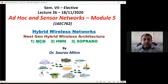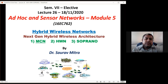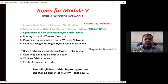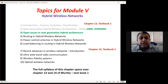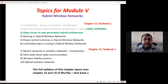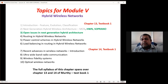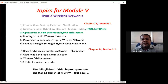Today we will finish the pending MCN discussion and cover two more new types: Hybrid Wireless Network architecture (HWN) and SOPRANO. Main target is to finish these three architectures, with around two slides for each. The syllabus covers introduction, features, evolution, and classification of hybrid wireless networks — done yesterday — then next-generation hybrid wireless architectures: MCN, HWN, and SOPRANO.